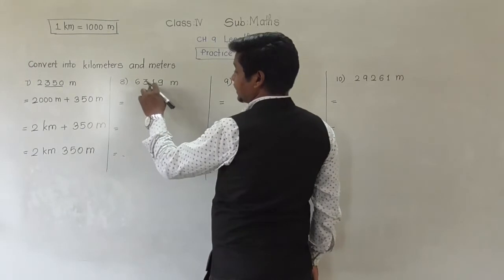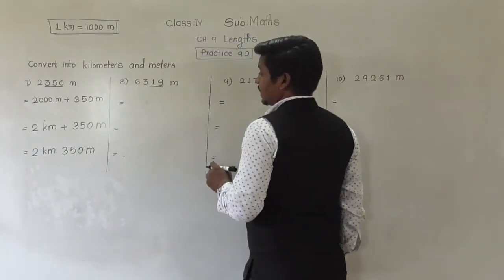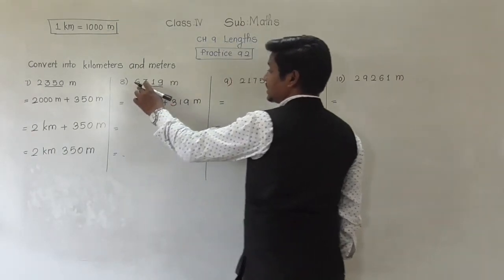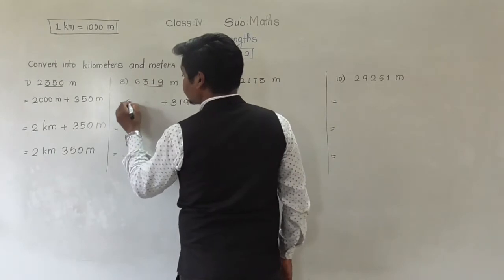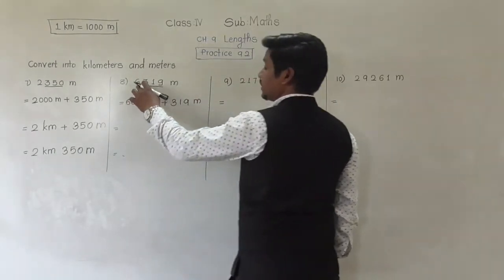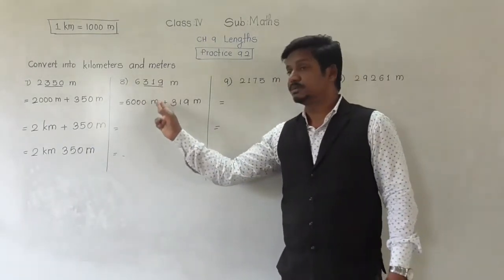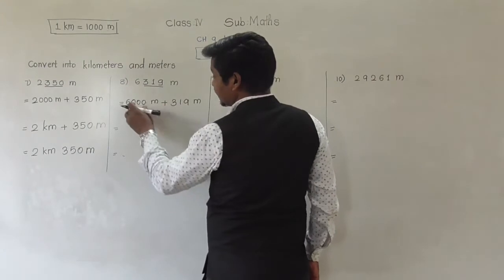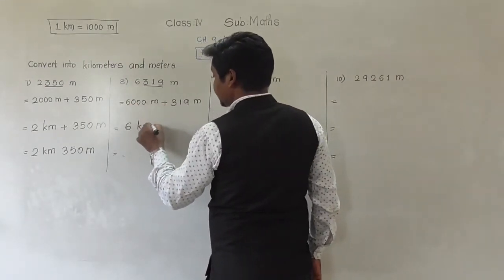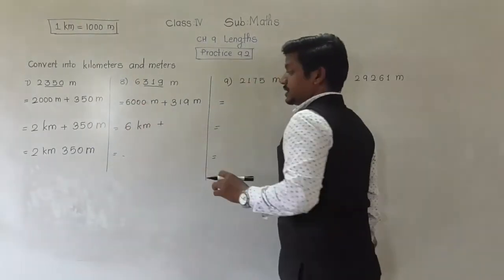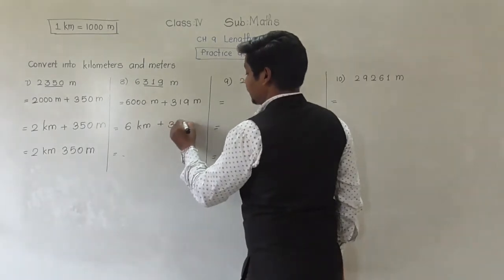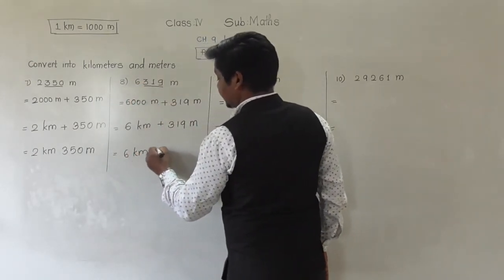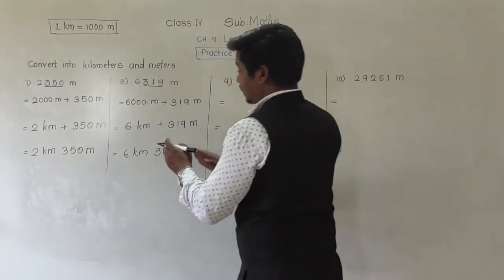Similarly: 6,319 meters — how many kilometers and how many meters? Underline the last three digits: 319 meters. The digit at the thousands place is 6, representing 6,000 meters. So 6,319 meters equals 6,000 meters plus 319 meters. Since 1,000 meters makes 1 kilometer, 6,000 meters makes 6 kilometers. Therefore 6,319 meters equals 6 kilometers and 319 meters.